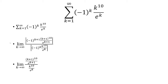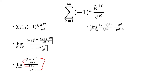Now we're going to rearrange this. So basically, the k plus 1 to the 10th is going to be on top of k to the 10th. Then e to the k is going to be on top of e to the k plus 1. I'm going to rearrange it so the k to the 10th terms are together and the e to the k terms are together.